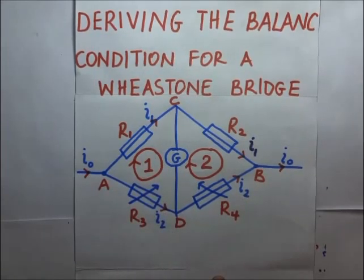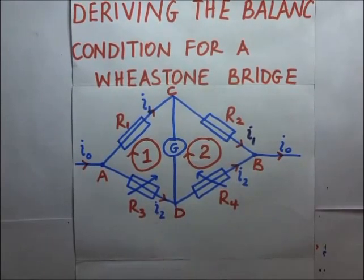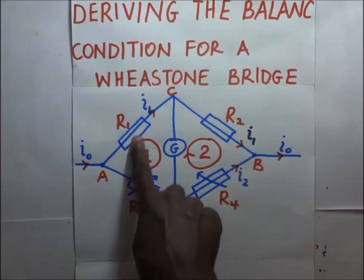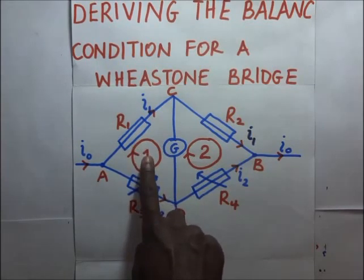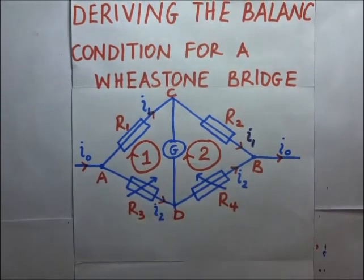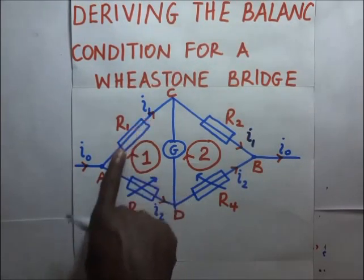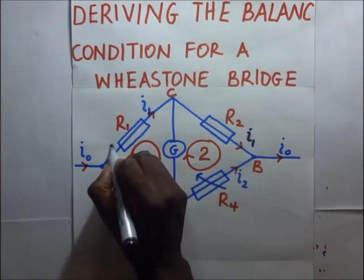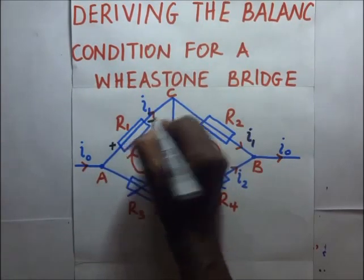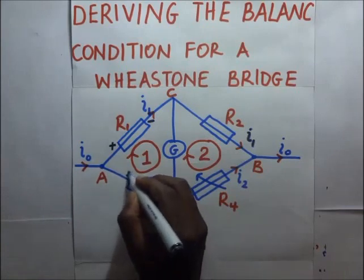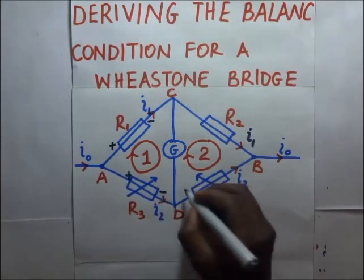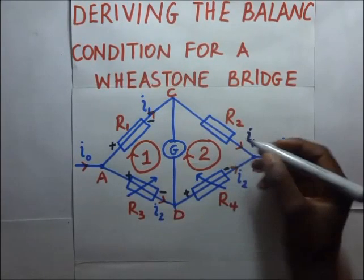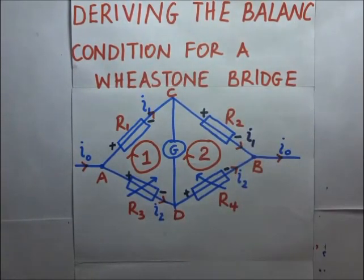We begin with Loop 1. According to Kirchhoff's voltage law, the algebraic sum of all voltages within a loop must equal zero. We assign potentials on the resistors: where current enters a resistor is the higher potential side, and where it exits is the lower potential side, since current flows from higher to lower potential.